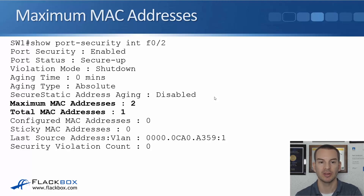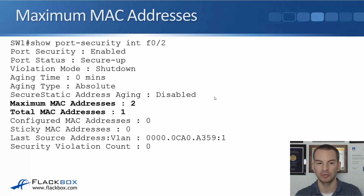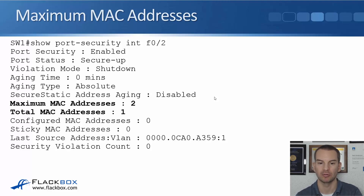To verify this, use the same command as usual: show port security interface fast 0/2. This shows you the difference between the maximum MAC address and the total MAC address output. Maximum MAC addresses is the total that is allowed to send traffic into the port. Total MAC addresses is how many are currently detected on the port. Here we've allowed two, but it's only discovered one MAC address so far.